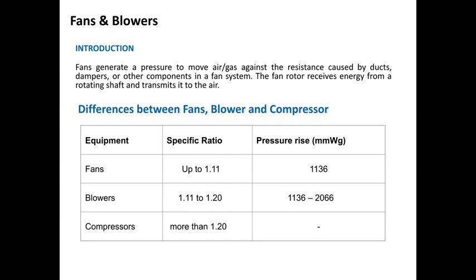Based upon this pressure ratio, we can differentiate fans, blowers and compressors. If the specific ratio is up to 1.1, it can be considered a fan. If it is between 1.1 to 1.2, it can be considered a blower. And if the specific ratio is more than 1.2, it can be considered a compressor. All three equipments handle gases — air or any other gas.